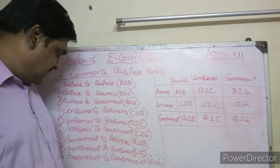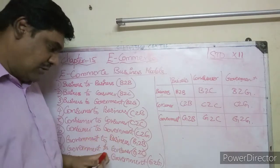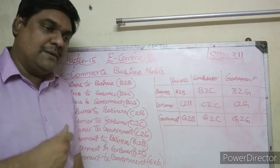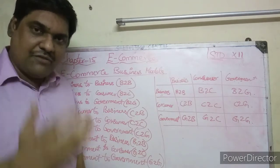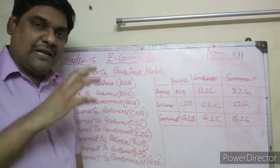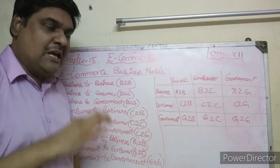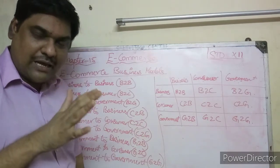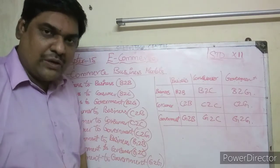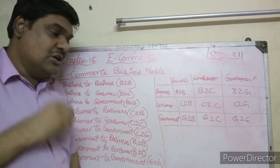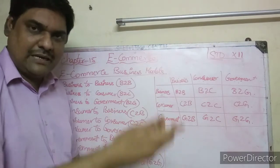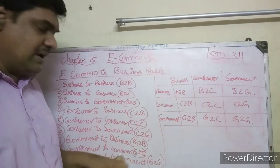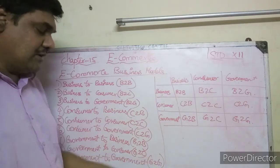Government to consumer refers to government websites that provide services to consumers. For example, obtaining a birth certificate, income certificate, or debt certificate online from the government. These are government to consumer websites.